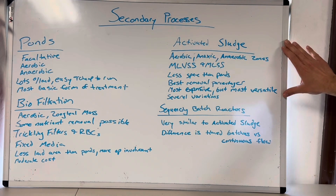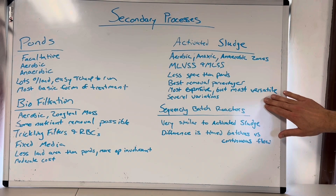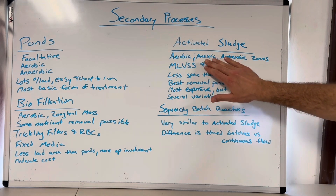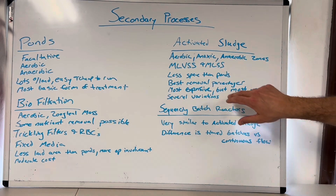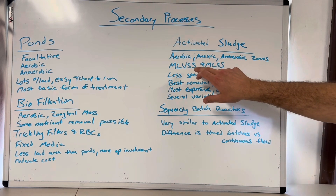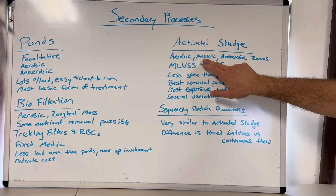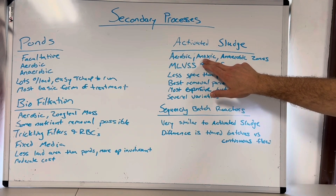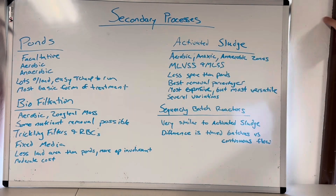Now you have activated sludge — the most common globally. It is the most effective at BOD and TSS reduction and the most versatile. For grade-three, four, and five operators and class A's and B's: BOD and TSS reduction, nitrification, denitrification — nitrogen removal, not just conversion — and phosphorus removal for anaerobic zones. We'll talk about all that at a later time.